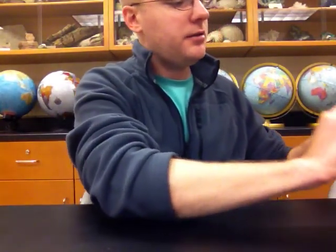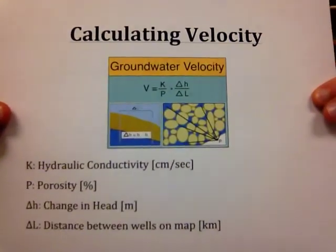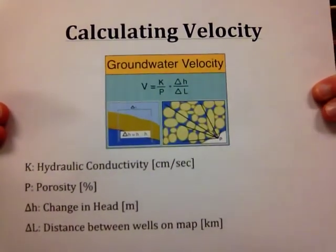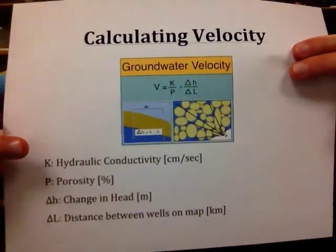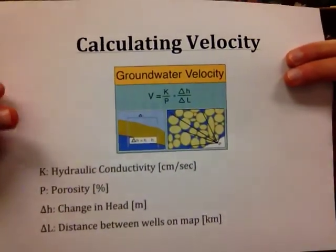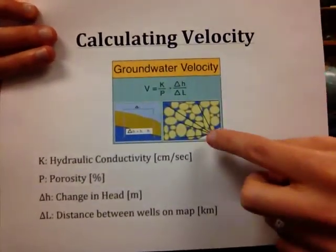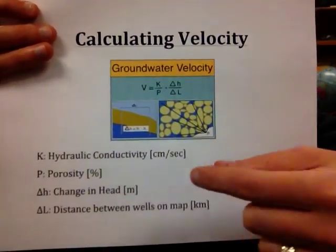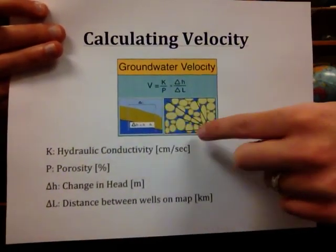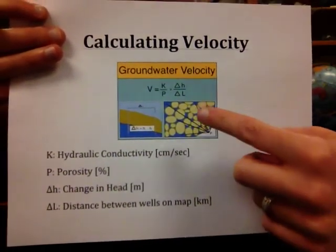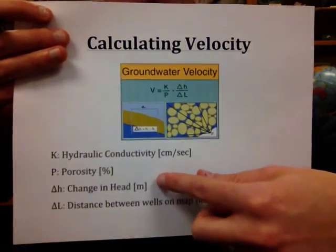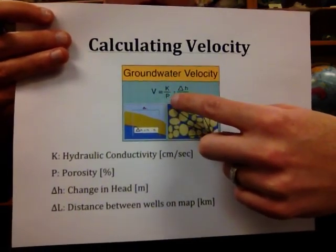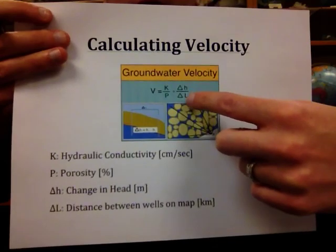The last calculation for Darcy's laws is groundwater velocity. Velocity V equals K, hydraulic conductivity, divided by porosity P. Porosity is the open spaces in the geologic material — the space between grains — given as a percentage of the total volume. Then we multiply by delta H over delta L, the change in head over the distance between the two points.